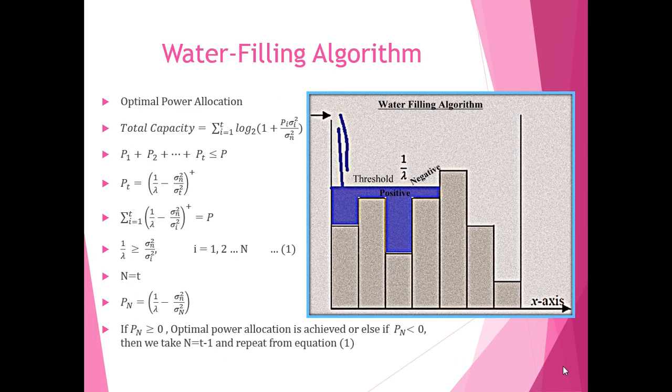Next, we have to detect the optimal power allocated to all participating channels. We found this by Lagrange's multiplier method. We also use the water filling algorithm that says any value of channel power exceeding the threshold of 1/λ, where λ is the Lagrange's multiplier, is considered to be 0. And any channel having power less than the threshold will have optimally allocated power.